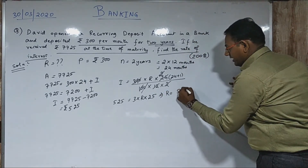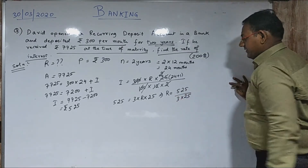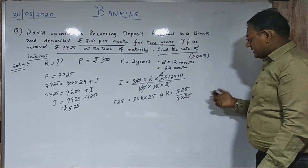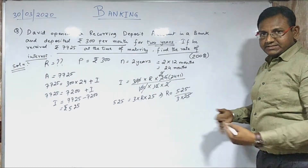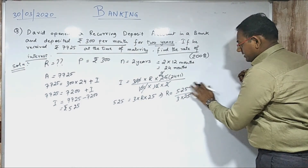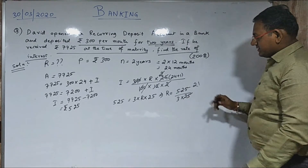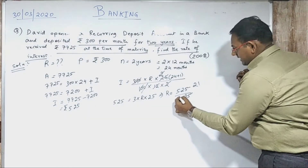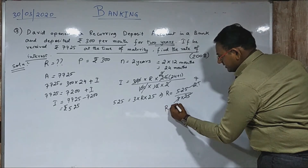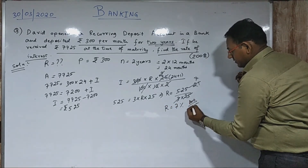So to calculate the rate of interest, it will be 525 divided by 3 into 25. Simplifying: 525 divided by 75 gives 7. So your rate of interest is 7%. This is your answer.